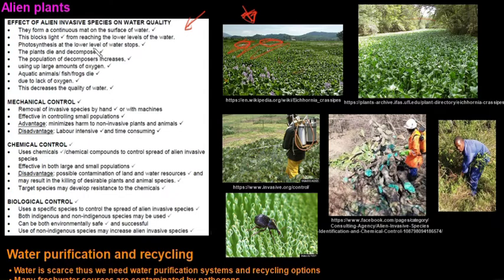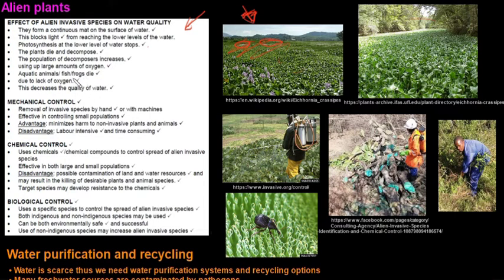Photosynthesis at the lower levels of the water stops, the plants die and decompose, and the population of decomposers such as bacteria increases. They use up a large amount of oxygen, and then aquatic animals such as fish and frogs die due to a lack of oxygen. This decreases the quality of the water, and you can see this section is very similar to eutrophication's effect on water quality.